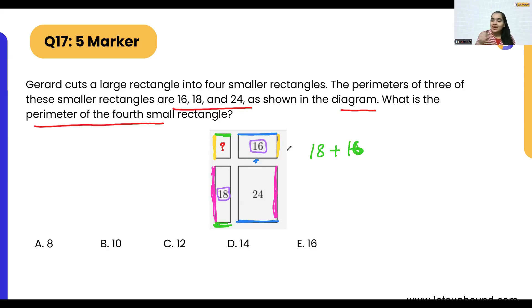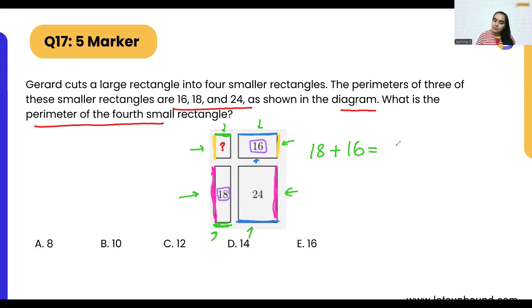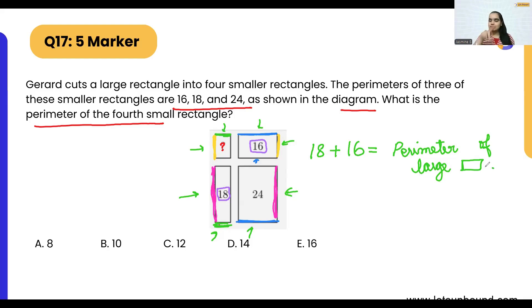All the sides are covering the outer boundary of the large rectangle which has been cut into smaller parts. So adding perimeters 16 and 18 is equivalent to the perimeter of those outer sides. Since they are the same size, we can see from the diagram they are aligned perfectly.